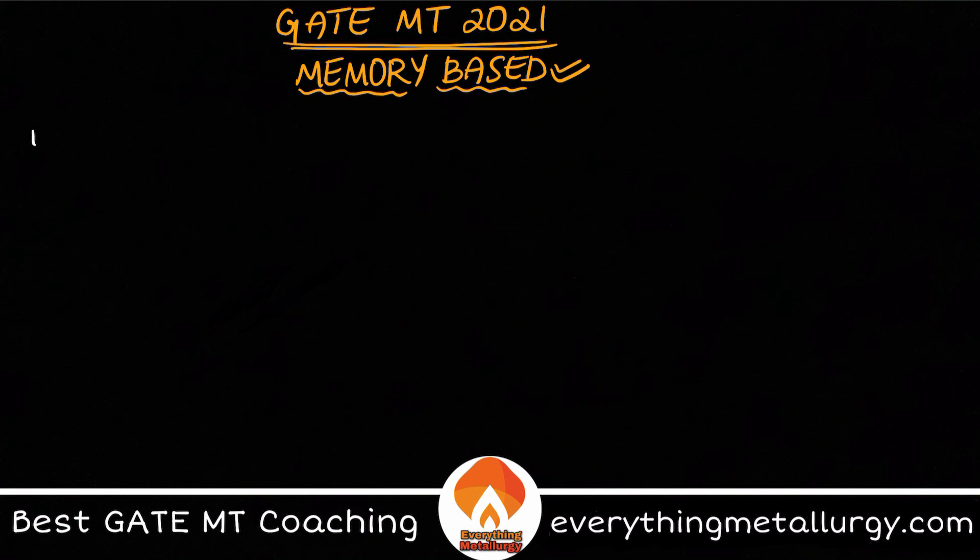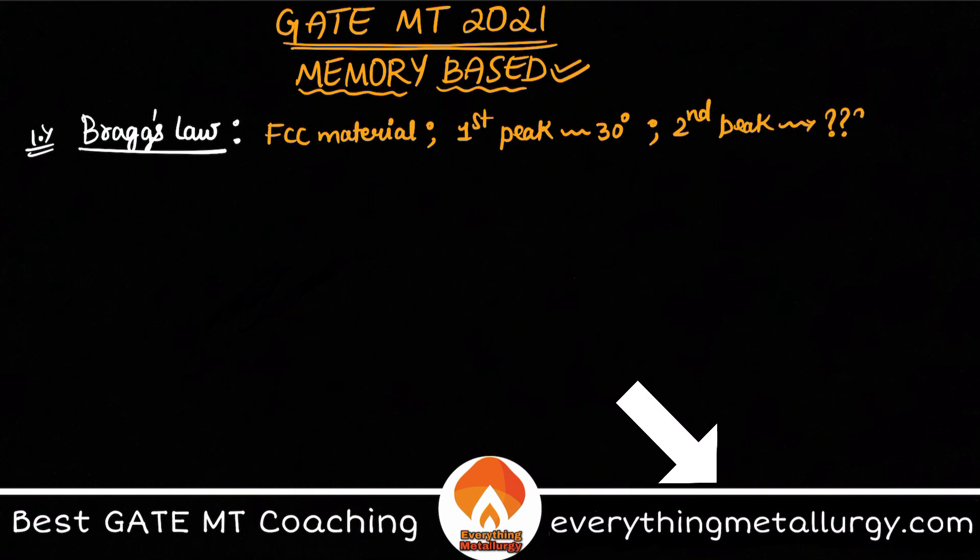The first question is a very important and easy question based on Bragg's law. What they gave is that we have an FCC material, and they said that the first peak is actually at 30 degrees theta value, and you need to calculate the angle at which the second peak is obtained. That is it. This is the given information about it.